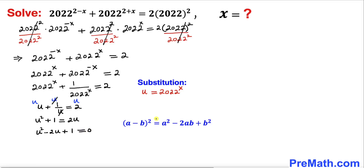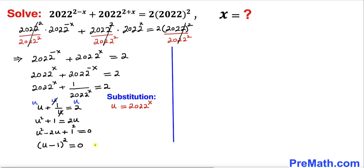Let's recall the famous identity (a minus b) whole square. Recognizing 1 as 1 squared, we can write the left hand side as (u minus 1) whole square equals 0. From this, u minus 1 equals 0.